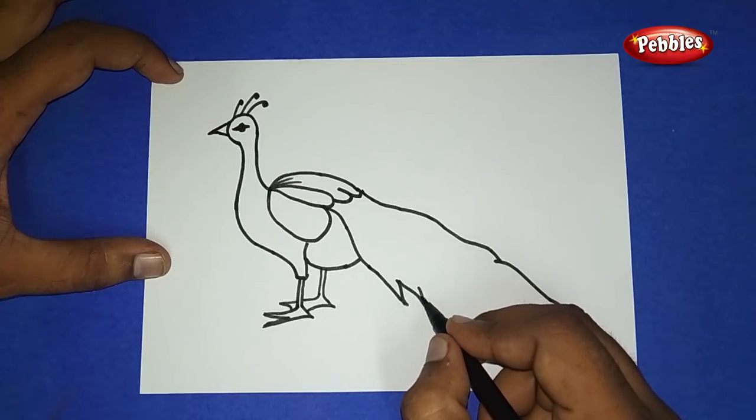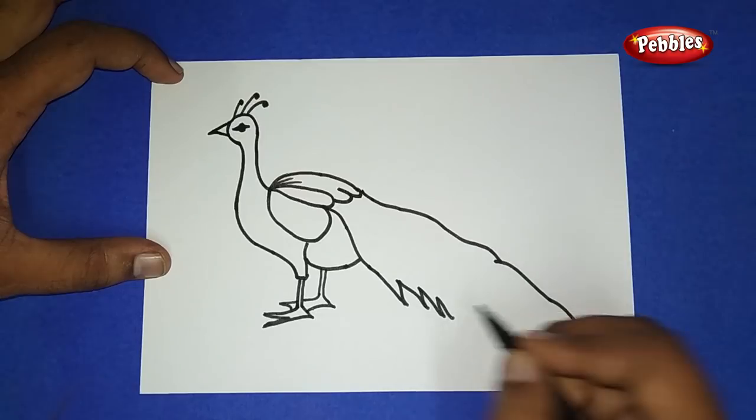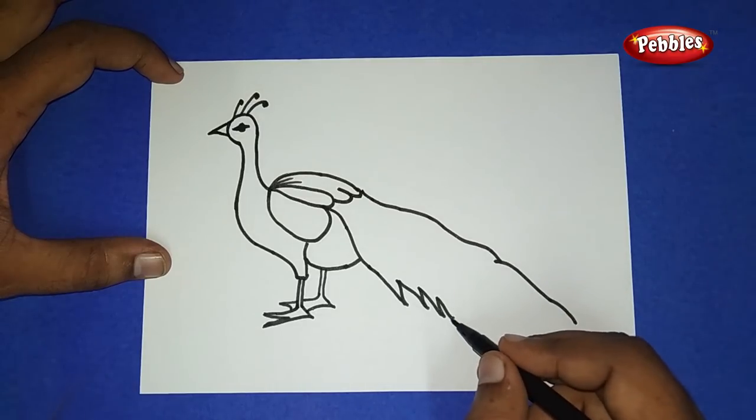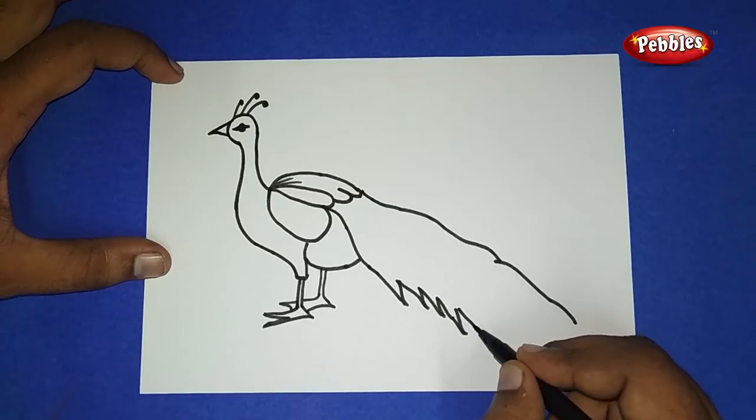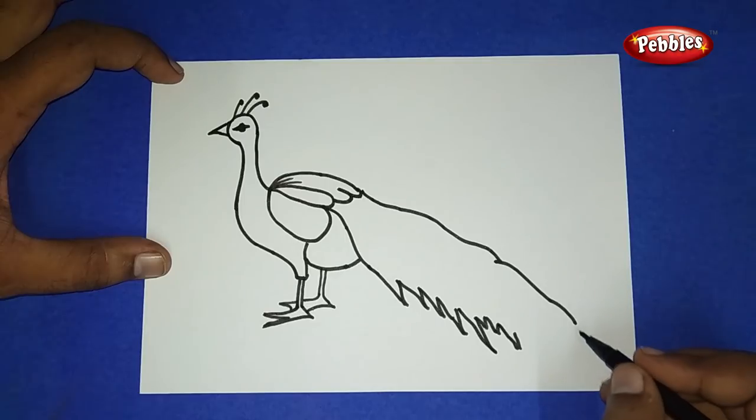By leaving some small gaps, draw like this. Full feathers, full feathers of peacock. Similarly, draw on both the sides and join them together.